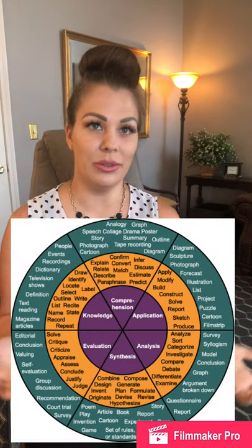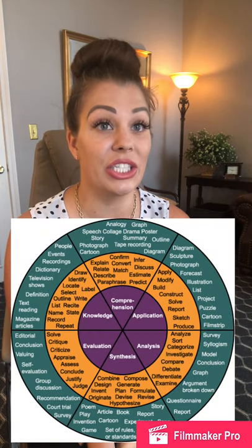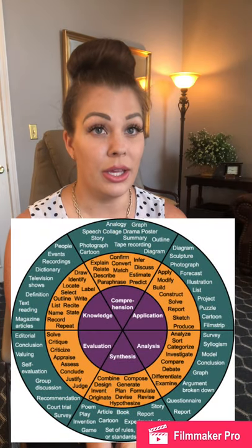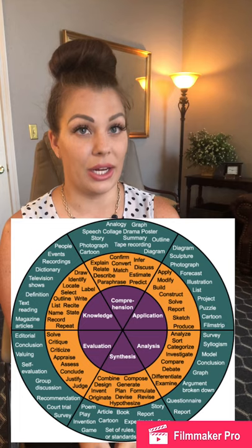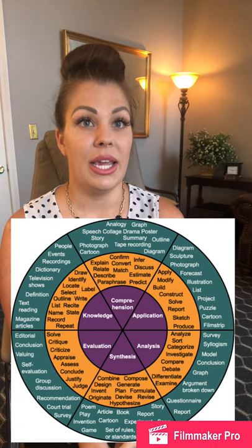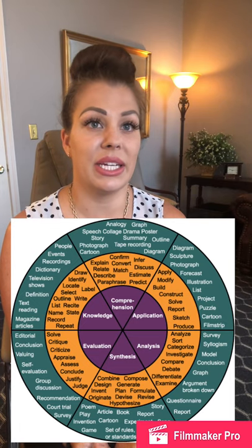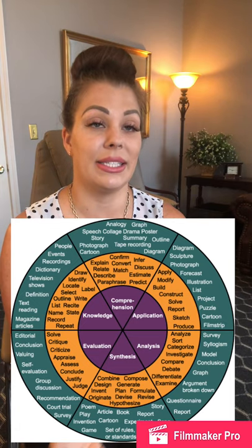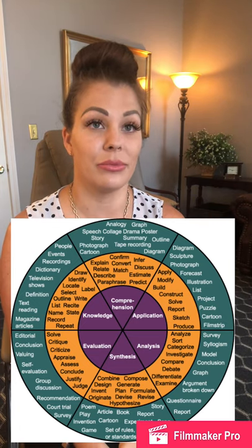So here is Bloom's Taxonomy Wheel, which shows each category, the related action verbs, and then the possible activities to assess each domain.